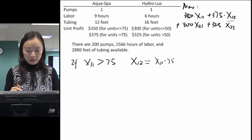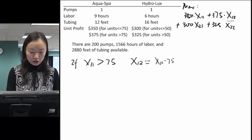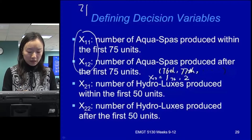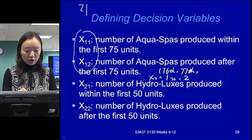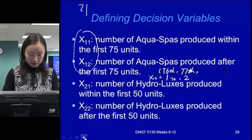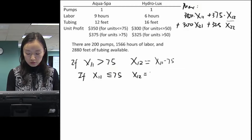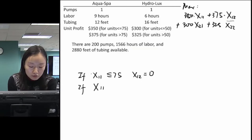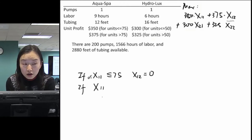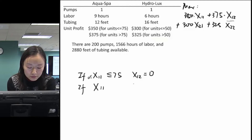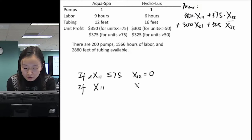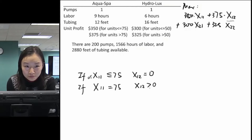Now let's think about the constraints and establish the relationship between x11 and x12. Can x12 start to be greater than 0 before x11 reaches 75? No. So: if x11 is less than or equal to 75, x12 must be 0. And x11 can only be between 0 and 75. When x11 equals 75, x12 can be greater than or equal to 0.